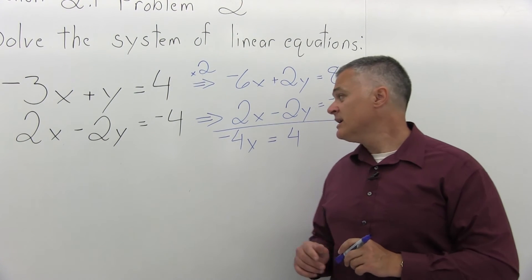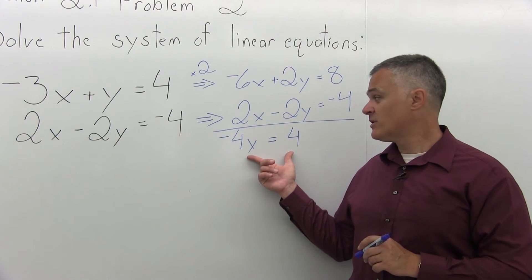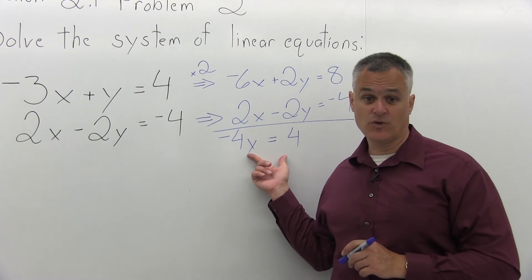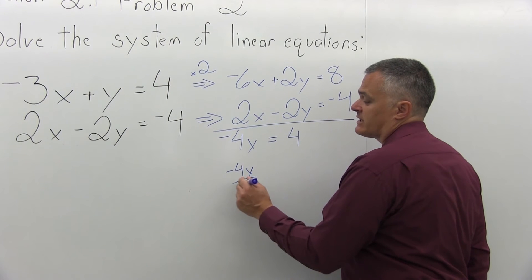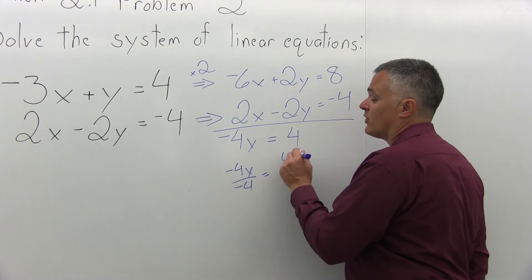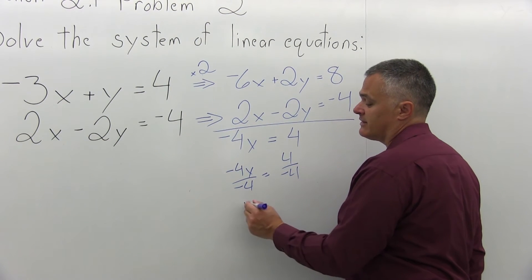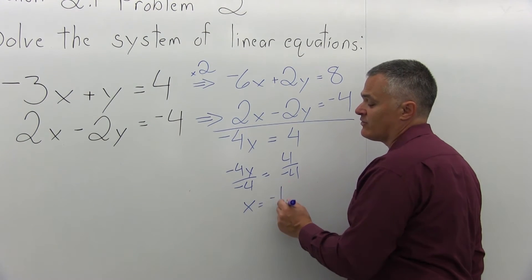Step three is solve for the remaining variable. So if I have negative 4x equals 4, divide out the negative 4 that's in front of the x. So negative 4x divided by negative 4 equals 4 divided by negative 4. And you'll get that x equals negative 1.